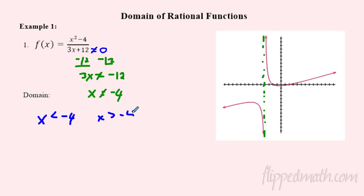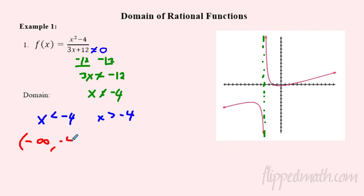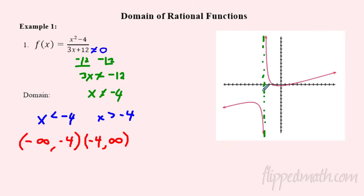I want to write the domain using interval notation. Starting from negative infinity, I can be anything until I hit negative 4 — open bracket, not including negative 4. Then from negative 4 to infinity, also open brackets. So the domain is negative infinity to negative 4, union, negative 4 to infinity. That shows it can be everything except negative 4.